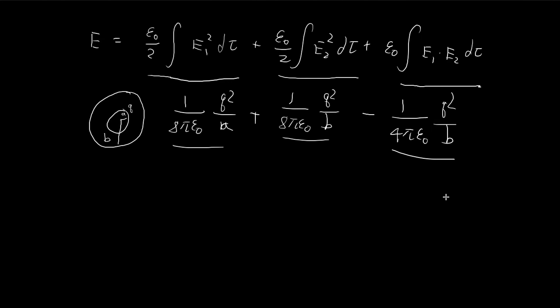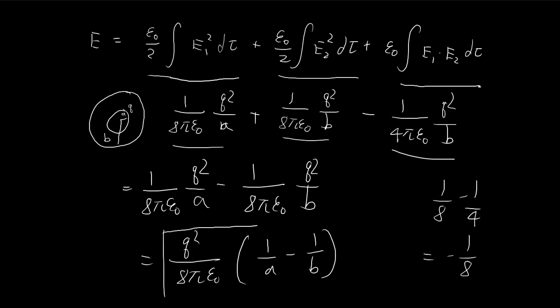So you see we can actually combine these two terms. 1/8 minus 1/4 is just negative 1 over 8. So we get 1 over 8 pi epsilon q squared over a minus 1 over 8 pi epsilon q squared over b. And then if you group the like terms together, q squared over 8 pi epsilon, you get 1 over a minus 1 over b. So this is the answer, which is identical to the one we got in part A.